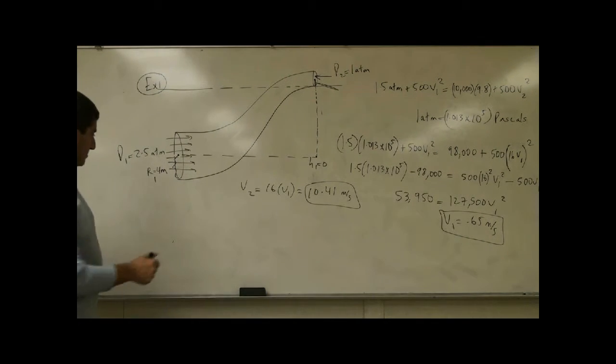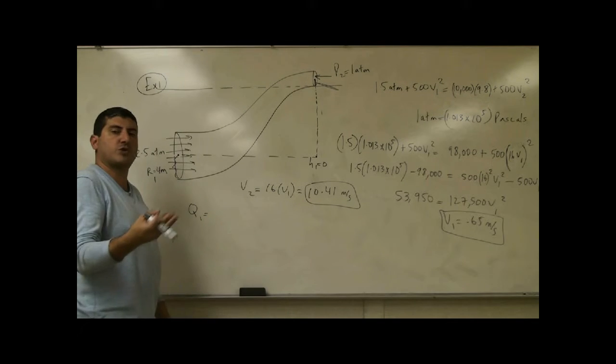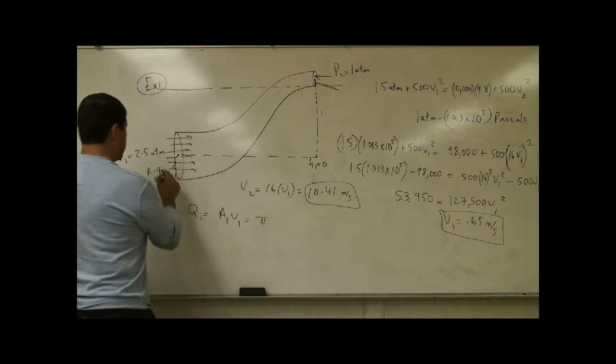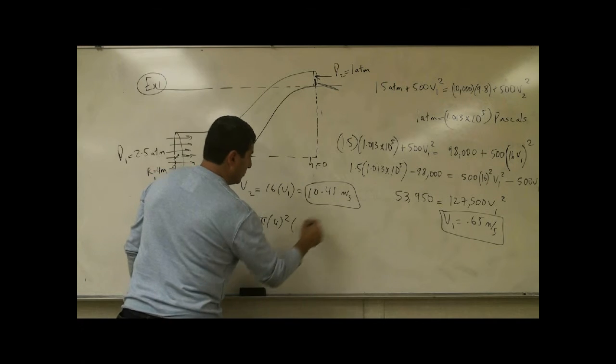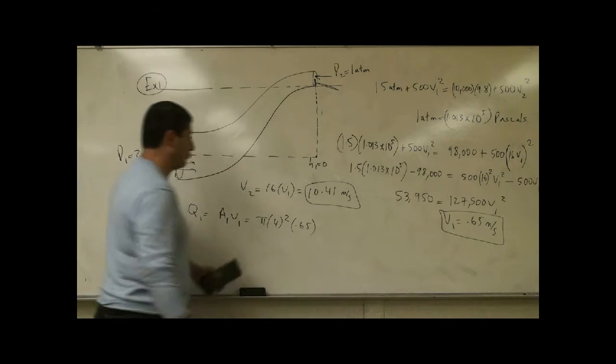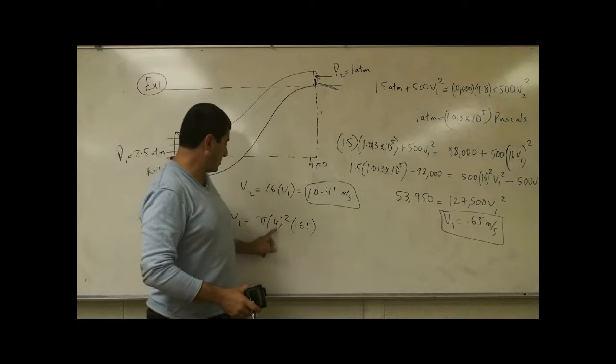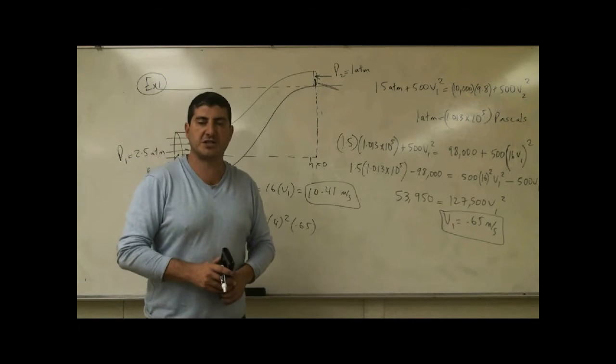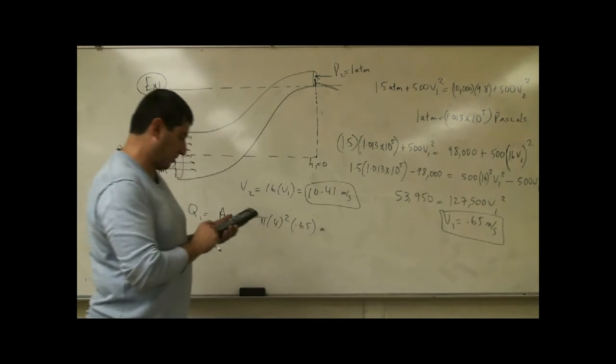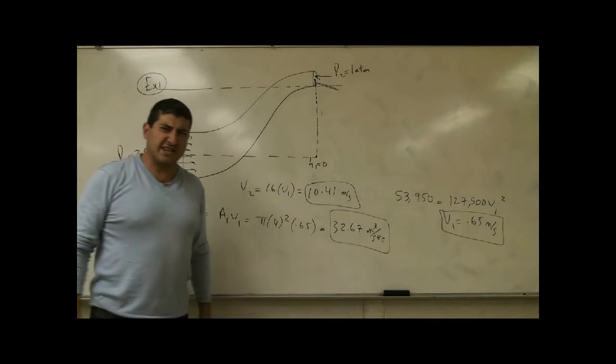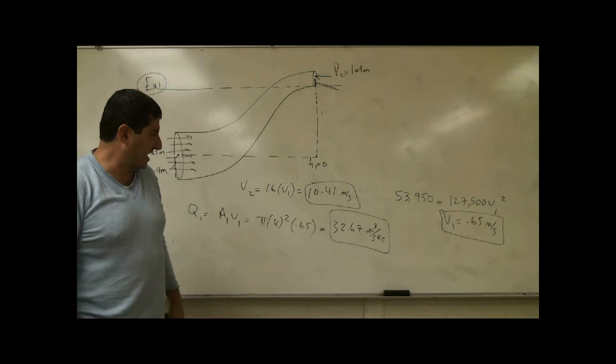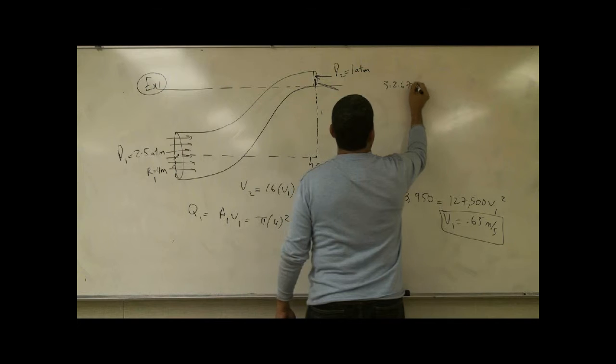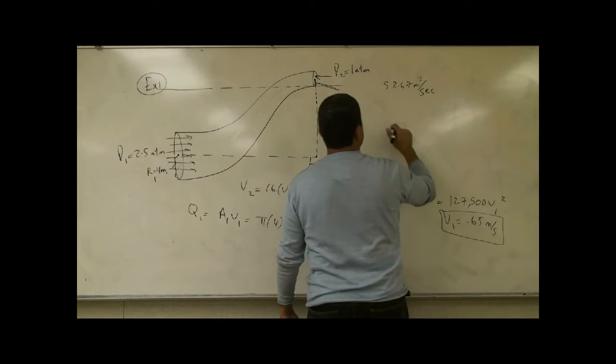So what is the volume flow rate? Q1 is equal to, we could either do A1 V1 or A2 V2. A1 V1, pi times the radius 4 squared times V1 0.65. If we did pi times 1 squared times 10.41, we would get the same answer because the whole premise is that the water is incompressible. So we have here, is that a lot? Is that little? Let's try to see how much is that. 32.67 cubic meters of water are flowing per second.